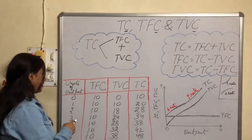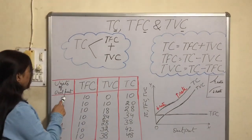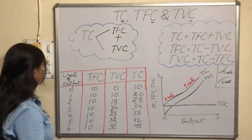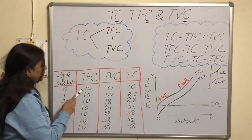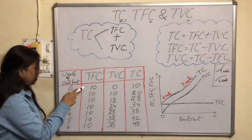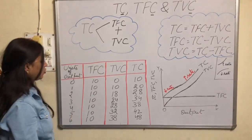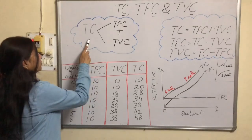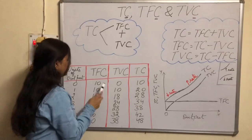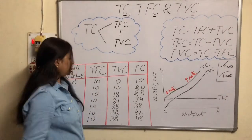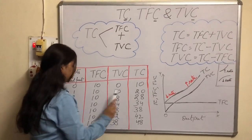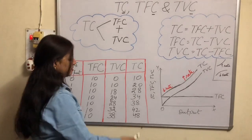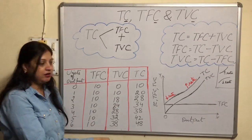Now we can also understand this with the help of a table and diagram. I have written units of output, total fixed cost, total variable cost, and total cost, with units of output from 0 to 6. TFC is the same at all levels of output — that means 10. TVC is increasing with increase in output. Total cost is the summation: 10+0=10, 10+10=20, 10+18=28, 10+24=34, 10+28=38, 10+32=42, 10+38=48. This relationship is clear with the help of the table.